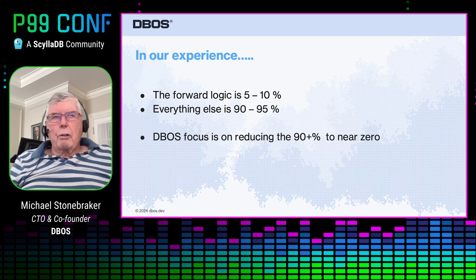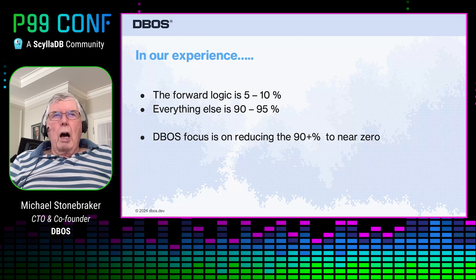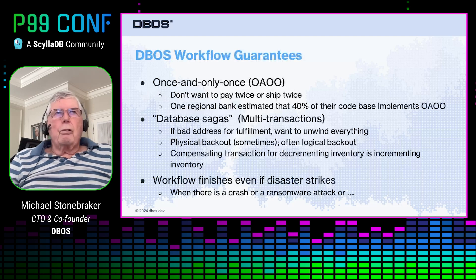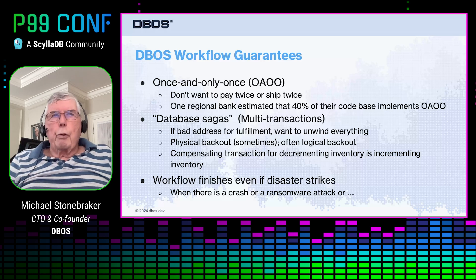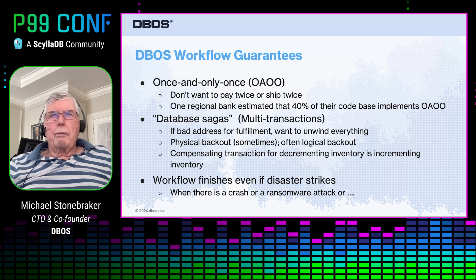So in my experience, or in the experience of the DBOS company, the forward logic is 5%, maybe 10%, and all this oops and error code is 90% or 95%. So you want to save an order of magnitude in your development time — you've got to focus on reducing everything else to near zero. So I'm going to tell you how we do that. DBOS gives you a bunch of workflow guarantees. First of all, any workflow — we guarantee every step is run once and only once. You obviously don't want to pay twice or ship twice. And this is a whole bunch of code, because one large regional bank that we've been talking to estimates that 40% of their legacy code base is there to implement once and only once.